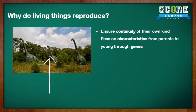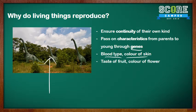Living things pass on characteristics from parents to their young. Many times the young do not look like the parents, but eventually they do as they grow. These characteristics are passed on through genes. Some characteristics passed on from parents to you include blood type, skin color, and hair color. In plants, examples include the taste of fruit and the color of flowers.